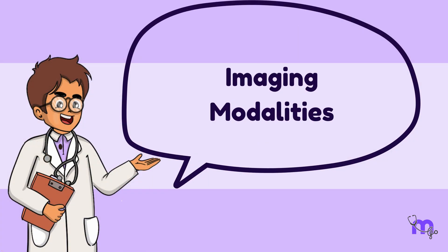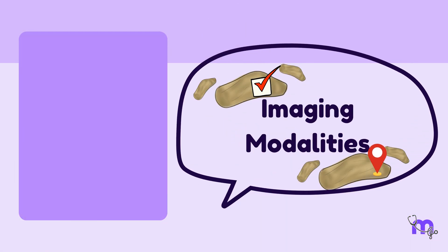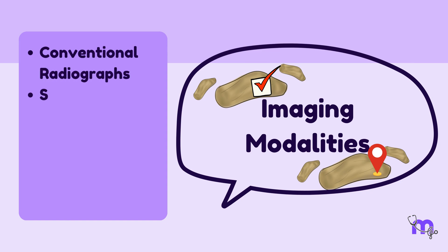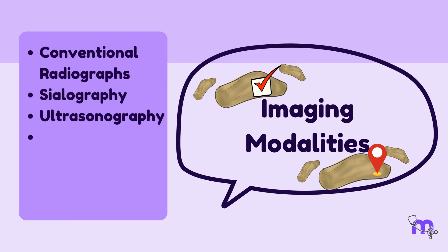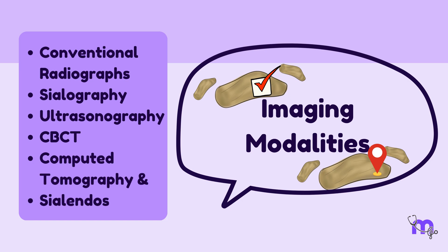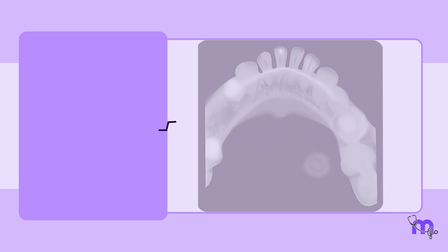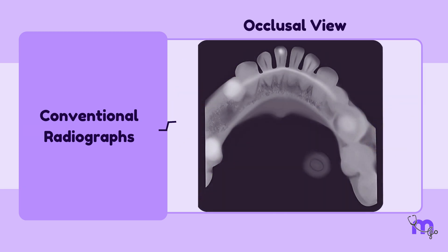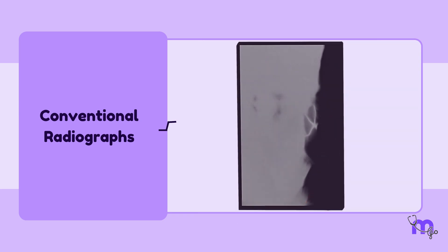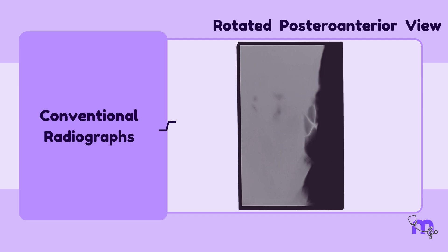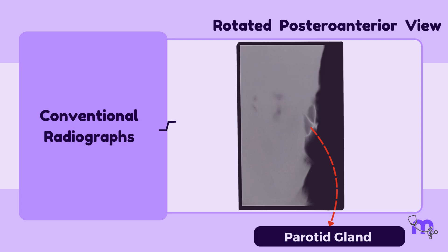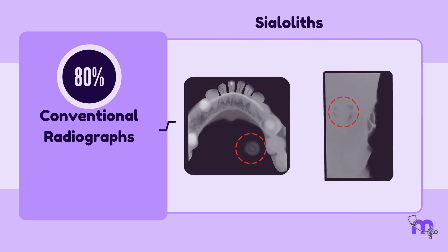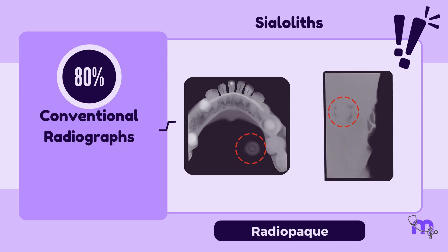Moving on to imaging modalities that help identify the presence and location of a sialolith. These include conventional radiographs, sialography, ultrasonography, CBCT, computed tomography, and sialendoscopy. Conventional radiographs are inexpensive, readily available, and result in minimal radiation exposure. Occlusal views are useful for detecting submandibular sialolithiasis. However, only about 80% of sialoliths are visible on these radiographs, as some lack the density required to appear radio-opaque.